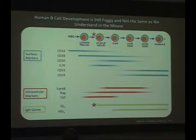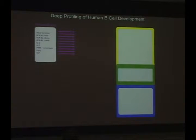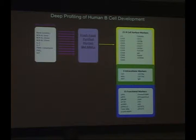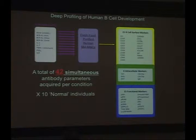We know that DJ rearrangement happens right around the pre-pro B-cell stage, and there are important signaling checkpoints that happen in the mouse, but we don't really know exactly where these things line up in humans. Sean and I sought to better understand this using normal human bone marrow. We took fresh Ficoll-separated human bone marrow mononuclear cells, stimulated with conditions relevant to B-cell development, and analyzed with a panel of 21 surface markers plus 6 intracellular markers and 15 functional markers — totaling 42 simultaneous antibody parameters per condition on 10 normal individuals.